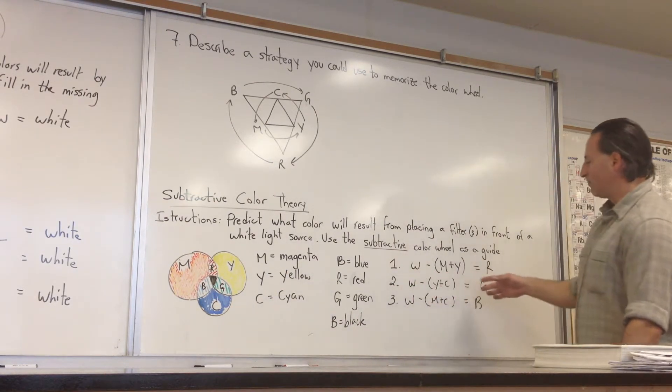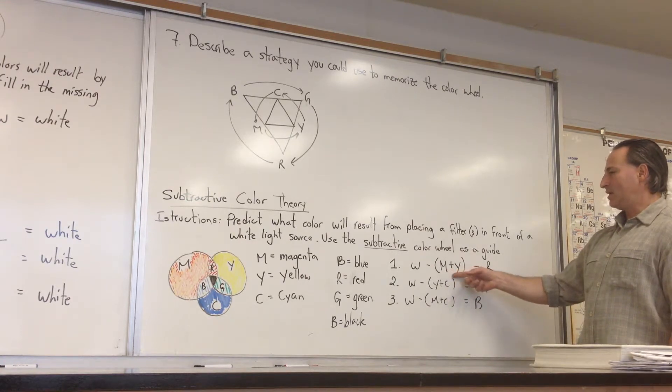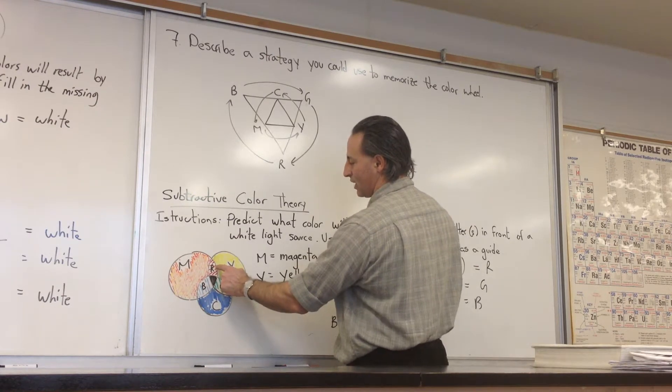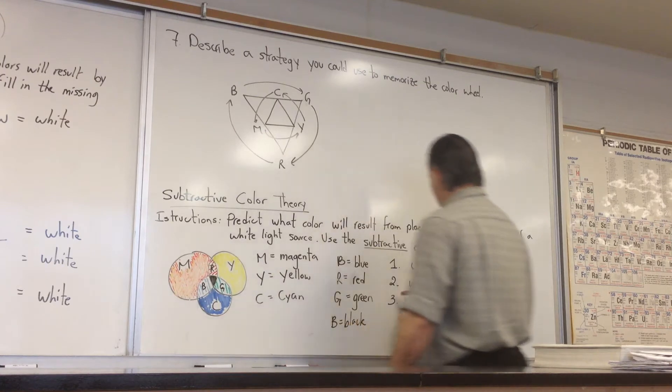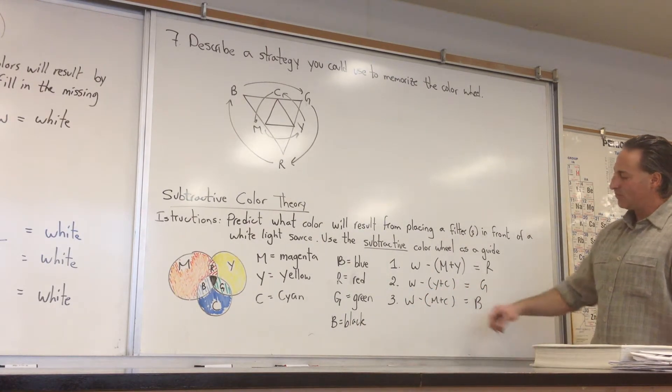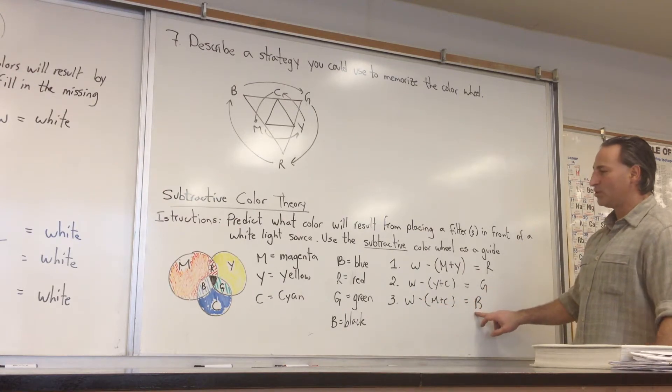That's what we have answered here. White light minus magenta and yellow allows red to shine through—it's the one color that doesn't get absorbed by these two filters. If you have white light shining through yellow and cyan filters, green will get through. If white light shines through magenta and cyan filters, then blue gets through.